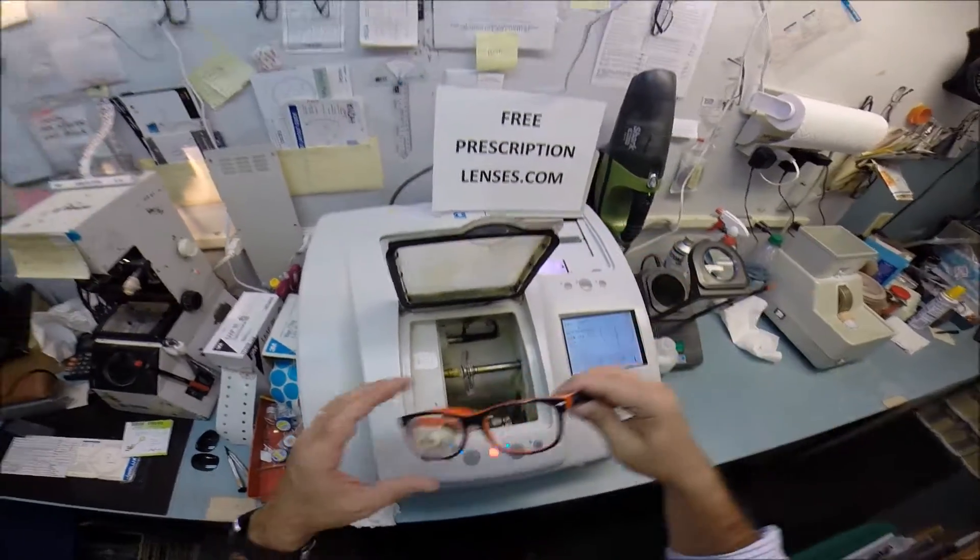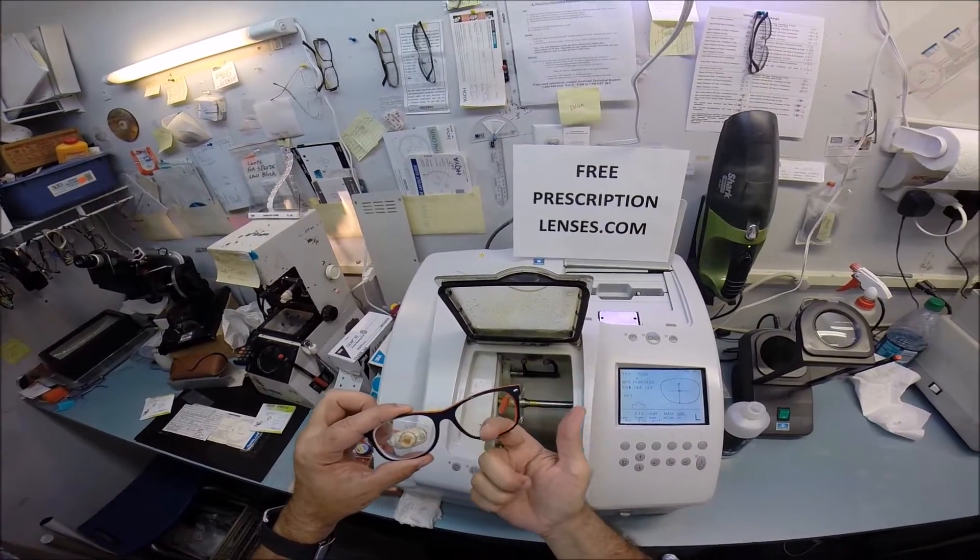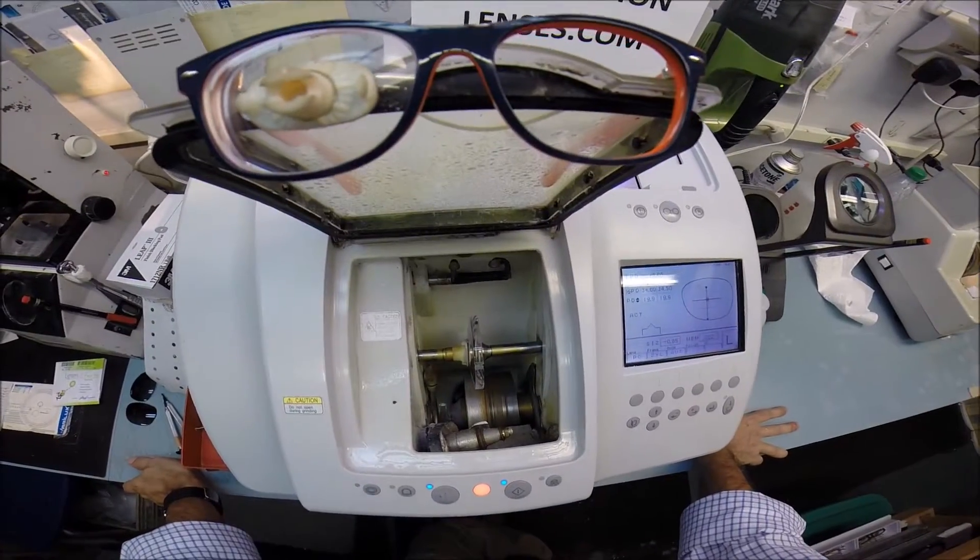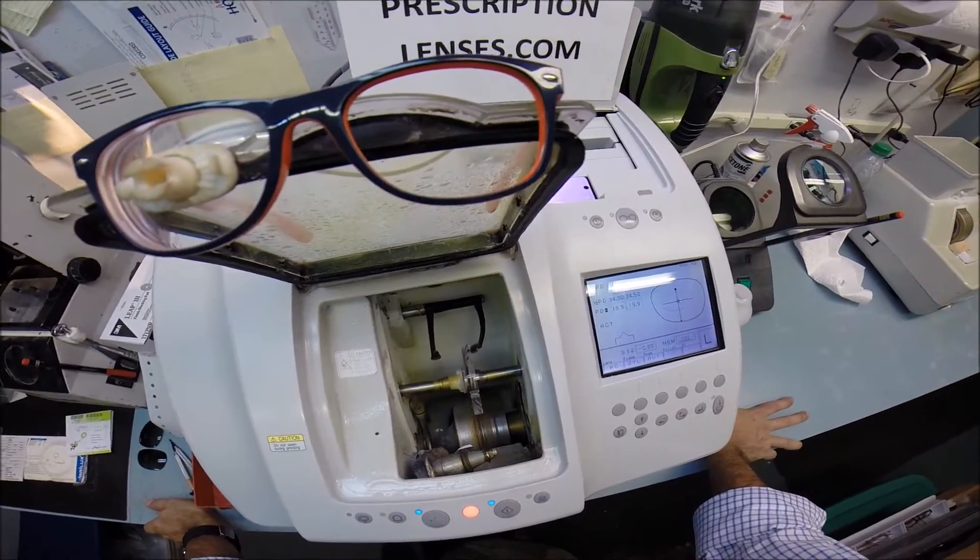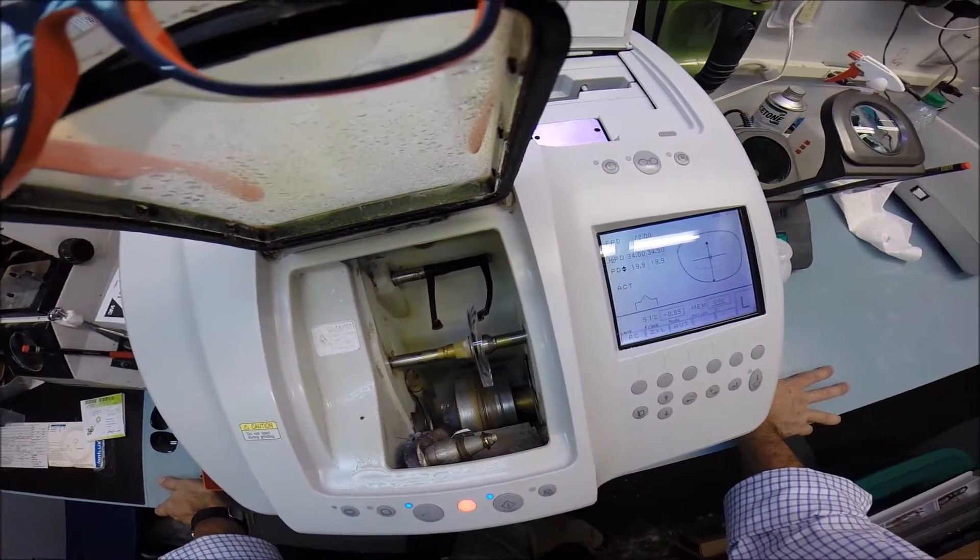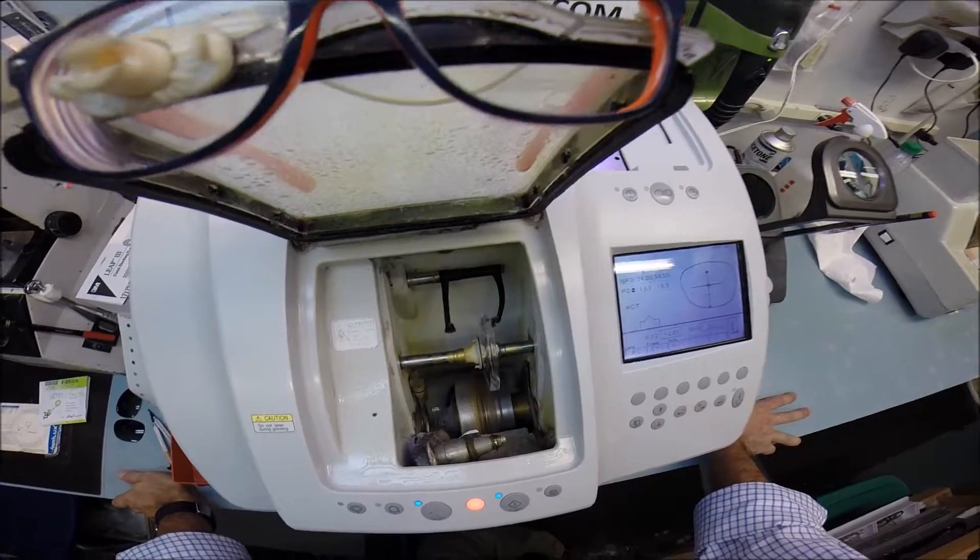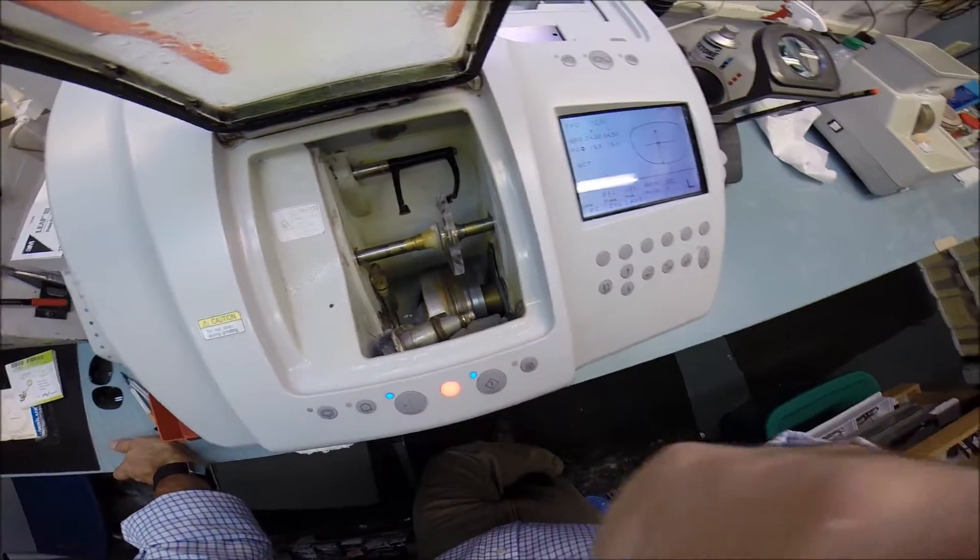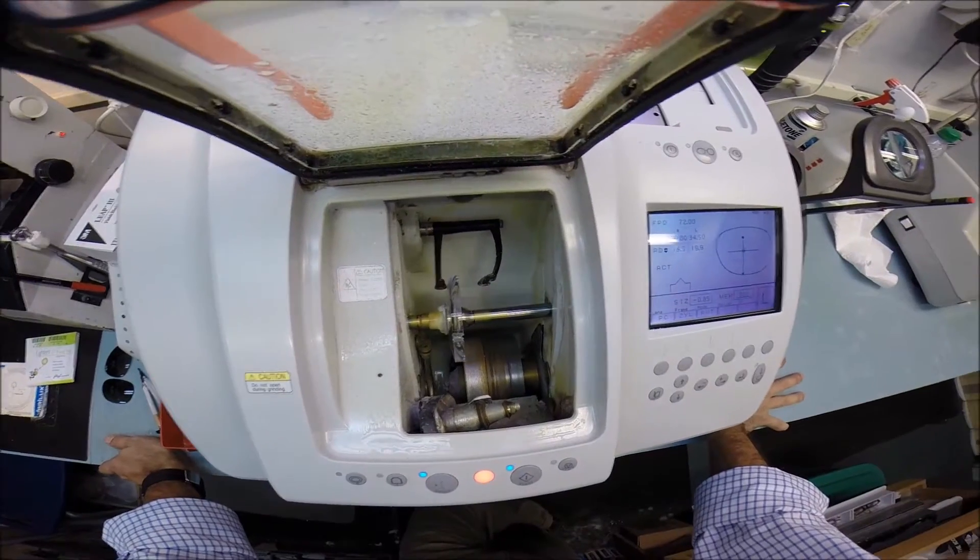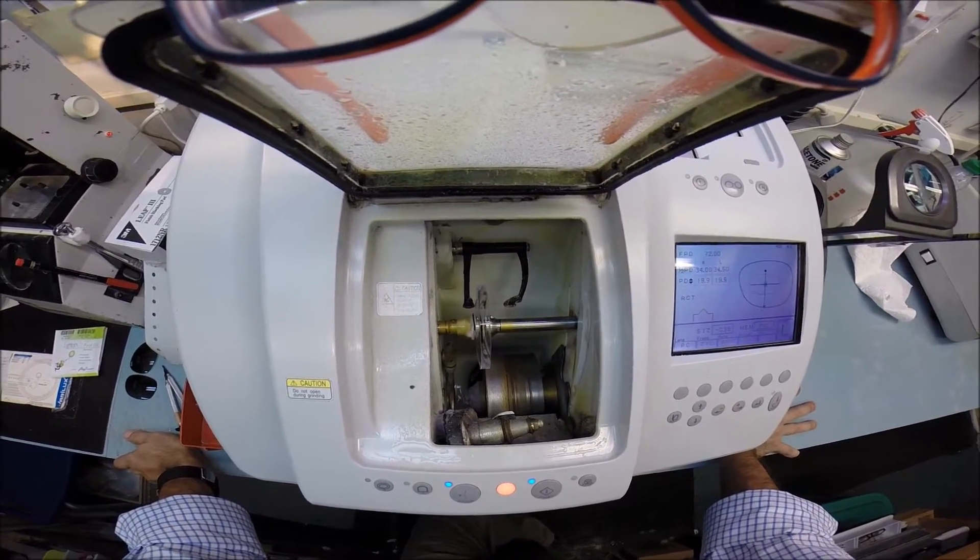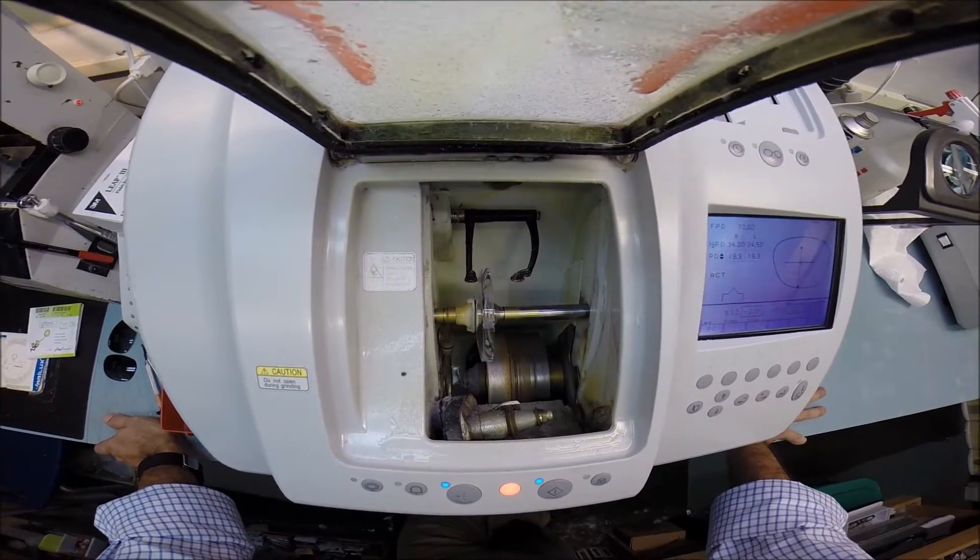And the calipers are going to come down. But this time, they're going to trace the shape of the left side of the frame to make sure the lens is large enough to fit. Always starting with the rear surface, the concave surface first, which is closest to the eyelashes. Then it will move forward and trace the convex front surface of the lens.